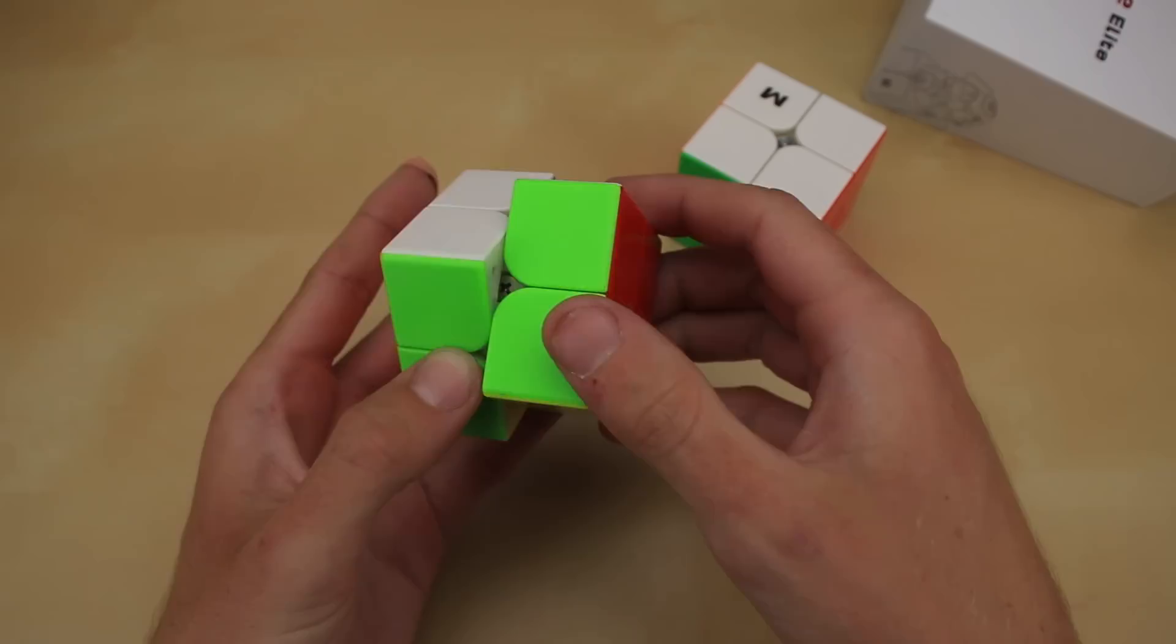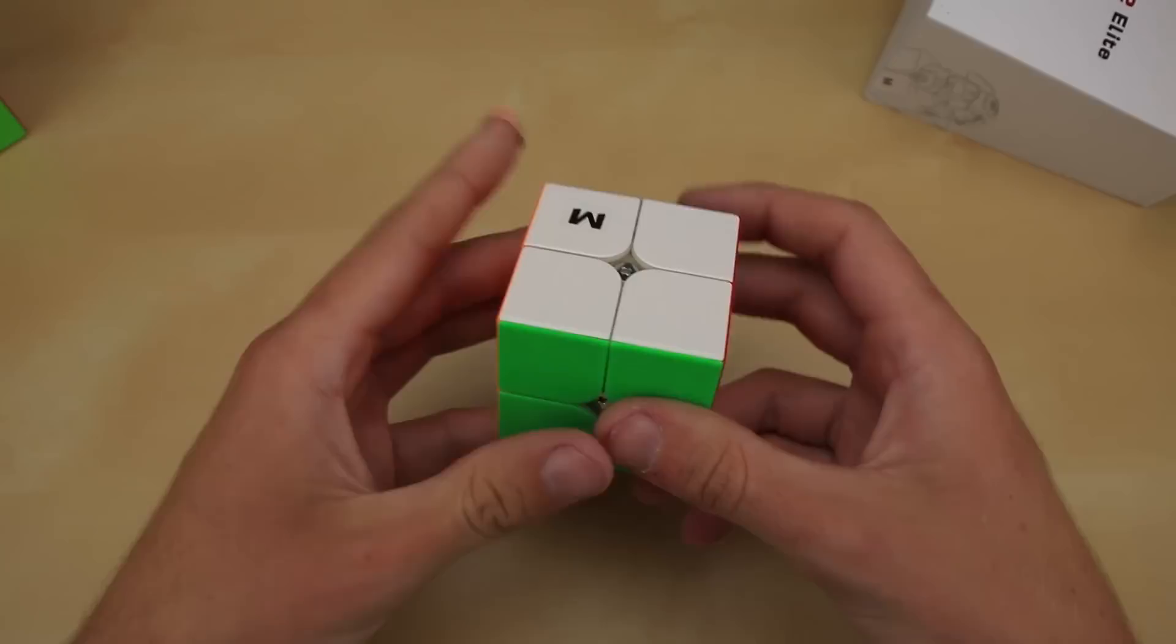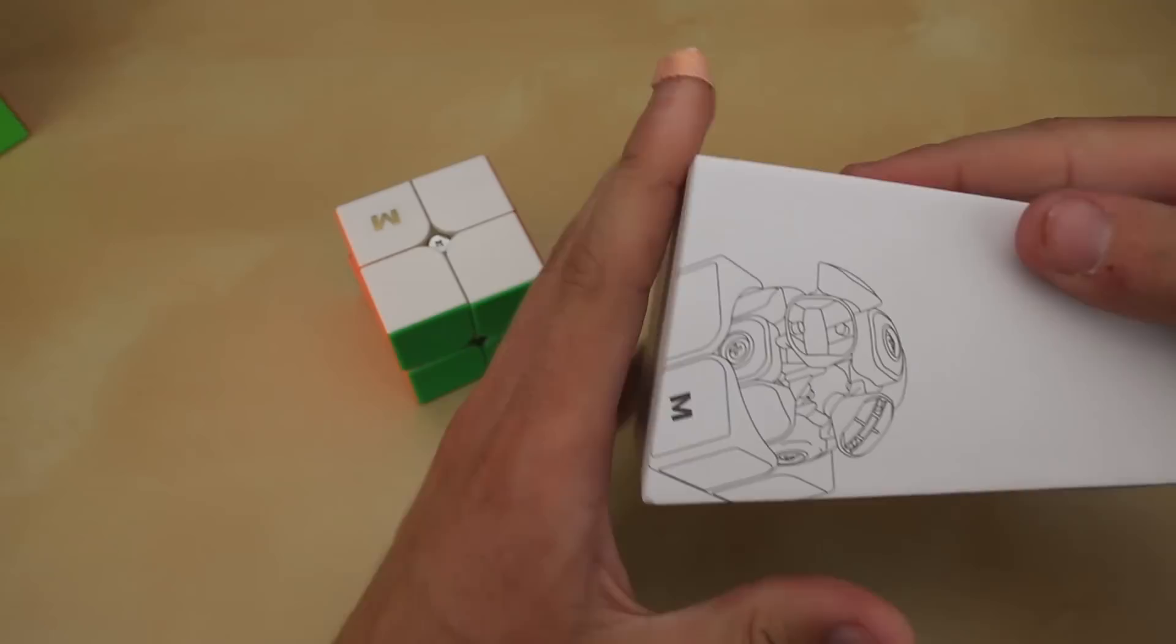The one kind of weird thing about it is the magnet placement. Most magnetic 2x2s just have pairs of magnets in between the corners to get them to snap together. The Valk 2 is actually a little bit different because it has magnets down in these edges. So you have inner edges attracting to the corners, kind of like on a 3x3.